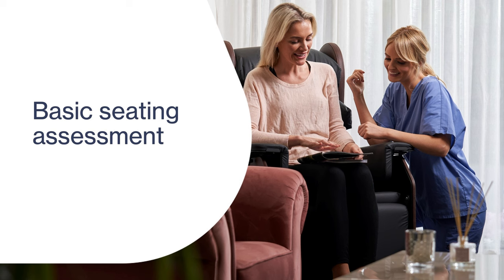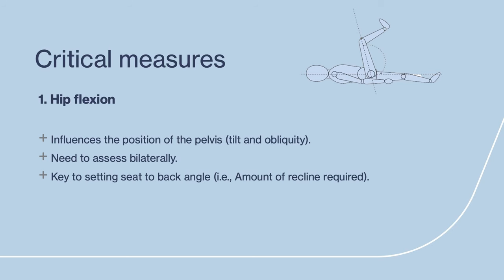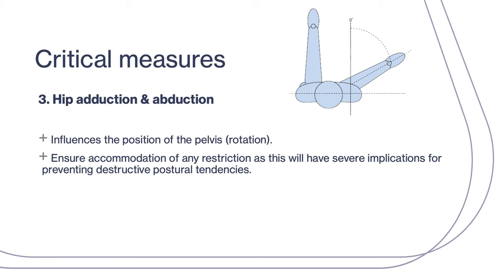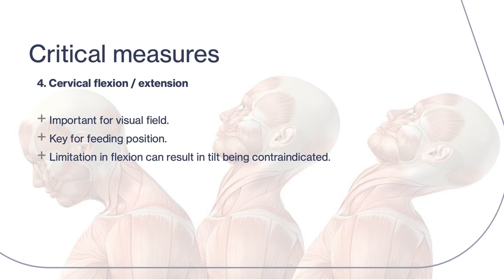We understand there may be times when it is not possible to conduct a full assessment. Here are some principles for a basic seating assessment. Critical measure one: hip flexion — very important to assess to understand where to set the back angle. Critical measure two: knee extension with hip flexed, assessing the hamstrings — important to ensure the right angle for the calf pad and foot plate. Critical measure three: hip abduction and adduction — this influences pelvis position and ensures accommodation of any restriction. Critical measure four: cervical flexion and extension — important for visual field, key for feeding position, and limitation in flexion can result in tilt being contraindicated.